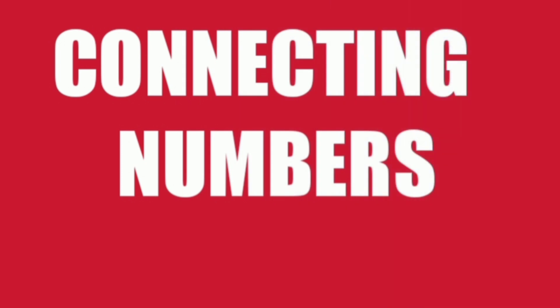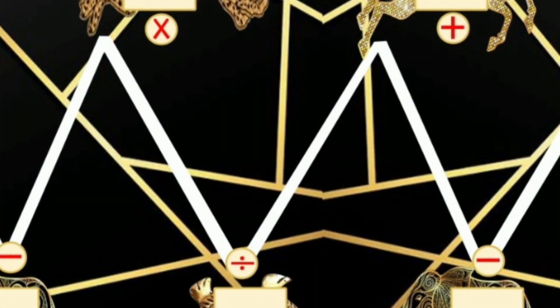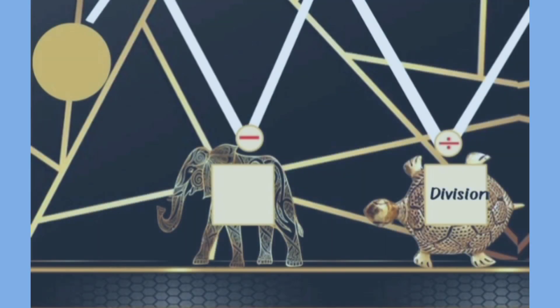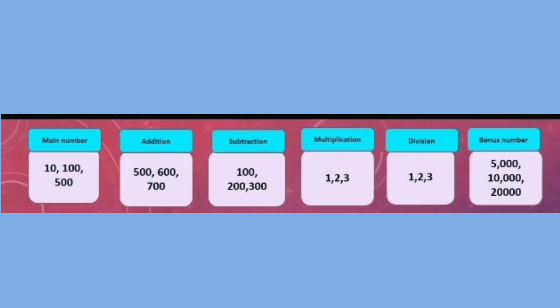You will find a main number and a bonus number. There are zones: addition zone, subtraction zone, multiplication zone, and division zone. You will find six bowls in front of you, and in all six bowls you will have three cards with three numbers printed on them.